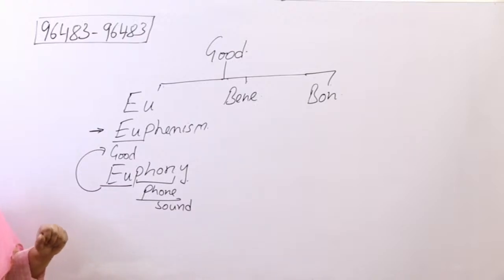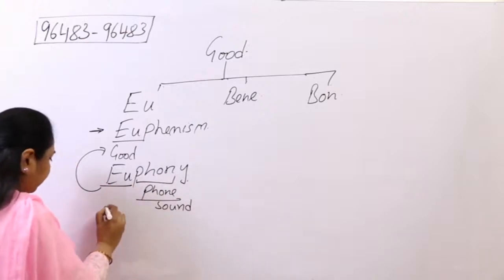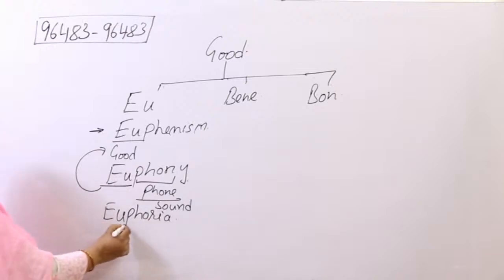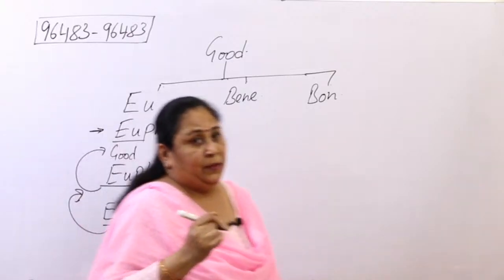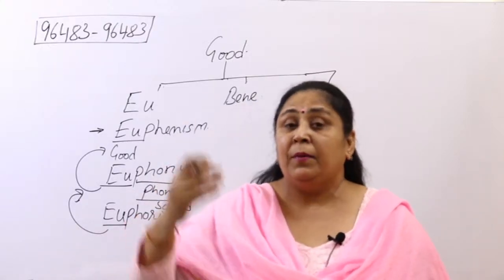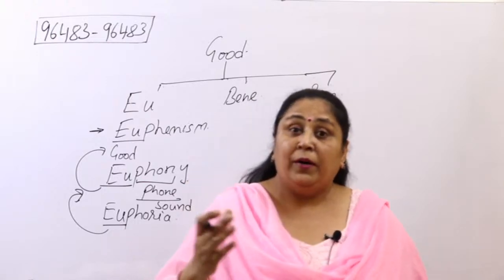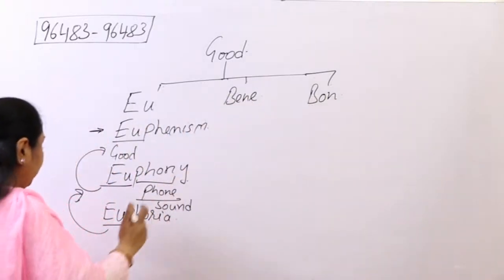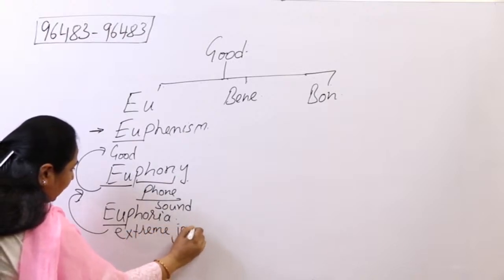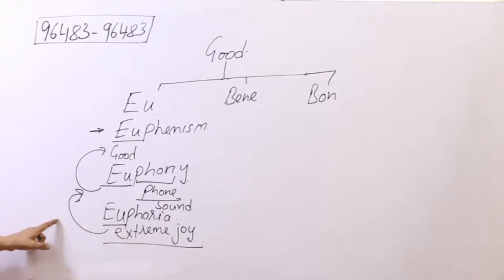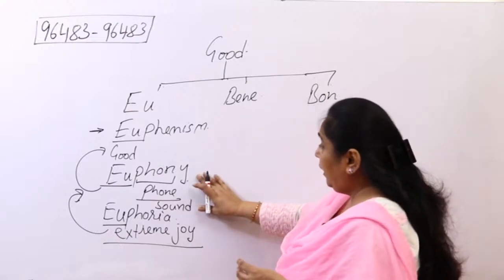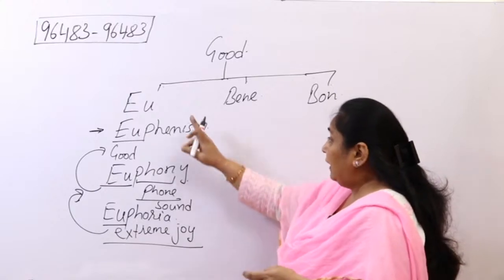Another excellent word with 'eu' is euphoria. Again, eu means good and phoria means feeling. So euphoria means an extreme feeling of happiness or joy — what we call 'paramanand' in Hindi. It is intense but momentary. That feeling of extreme excitement or joy is called euphoria, and the adjective form is euphoric.